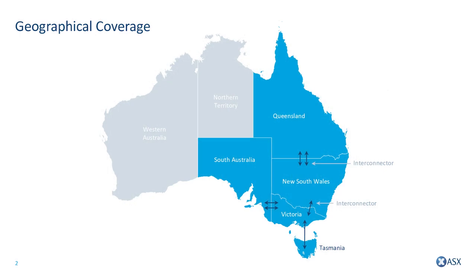The NEM started operation as a wholesale spot market in 1998 and comprises the East Coast regions of Australia, namely Queensland, New South Wales, Victoria, Tasmania and South Australia. ASX currently has listed products for all of these regions except Tasmania.